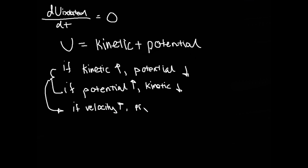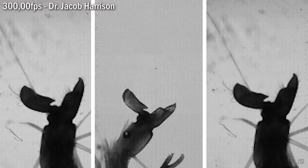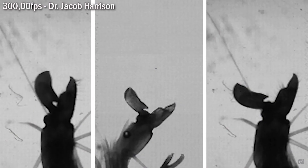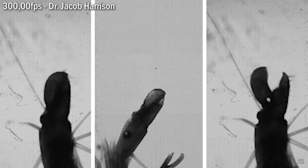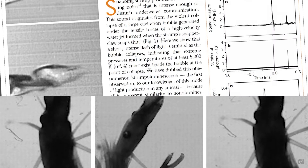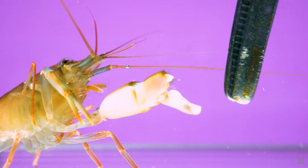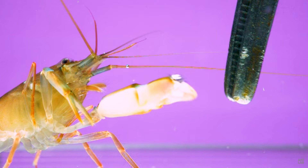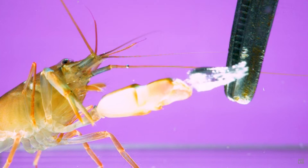Consequently, the water loses potential energy, or pressure, and this pressure falls below the water's vapor pressure, creating water vapor. The collapse of the bubble produces temperatures equivalent to the surface of the sun and even creates light — a phenomenon known as sonoluminescence. To explain how this process occurs, Sheldon J. Plankton will explain adiabatic processes.